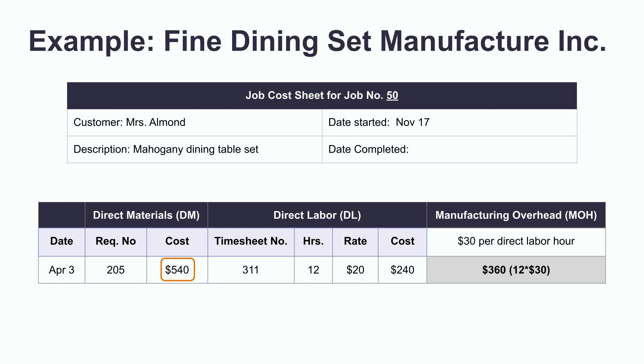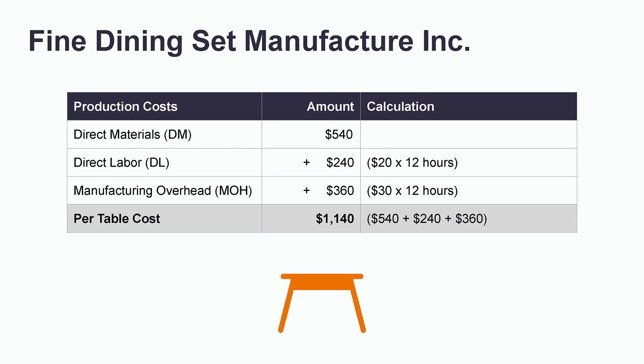On April 3rd, we buy $540 worth of direct materials for the table. The direct labor to make the dining set is 12 hours times the rate of $20 per hour. The manufacturing overhead is a predetermined rate of $30 times the direct labor hours of 12 hours. Total cost: direct materials $540, direct labor $240 (20 × 12 hours), manufacturing overhead $360 (30 × 12 hours), for a total cost of $1,140.